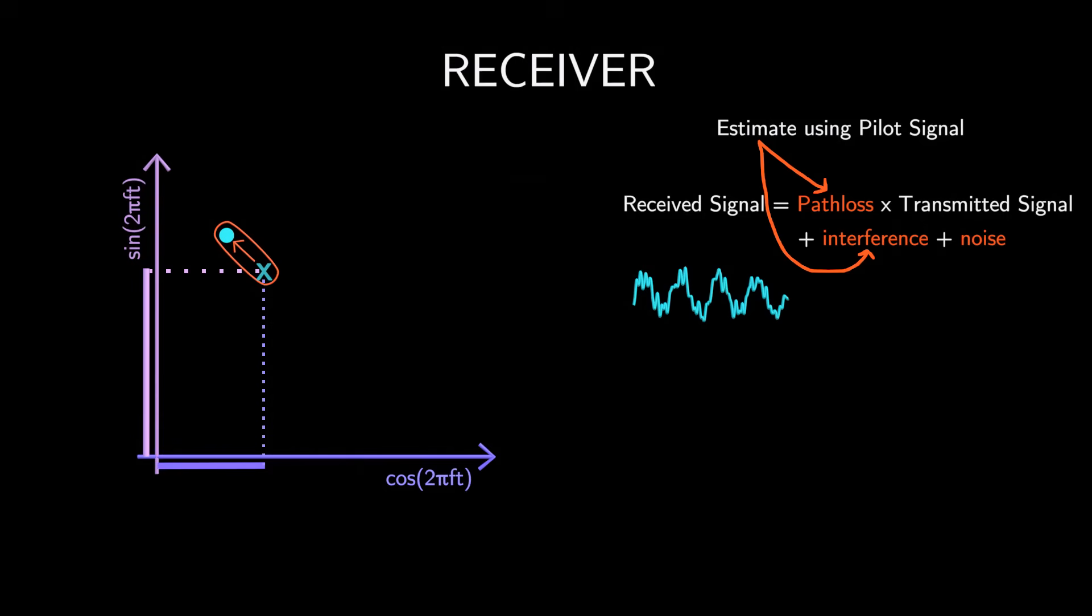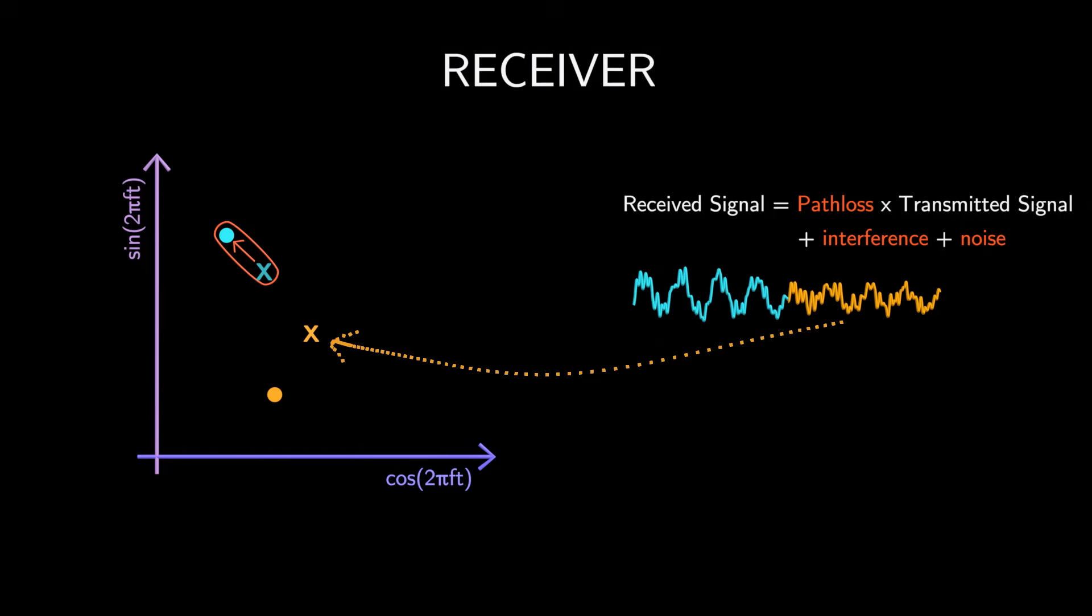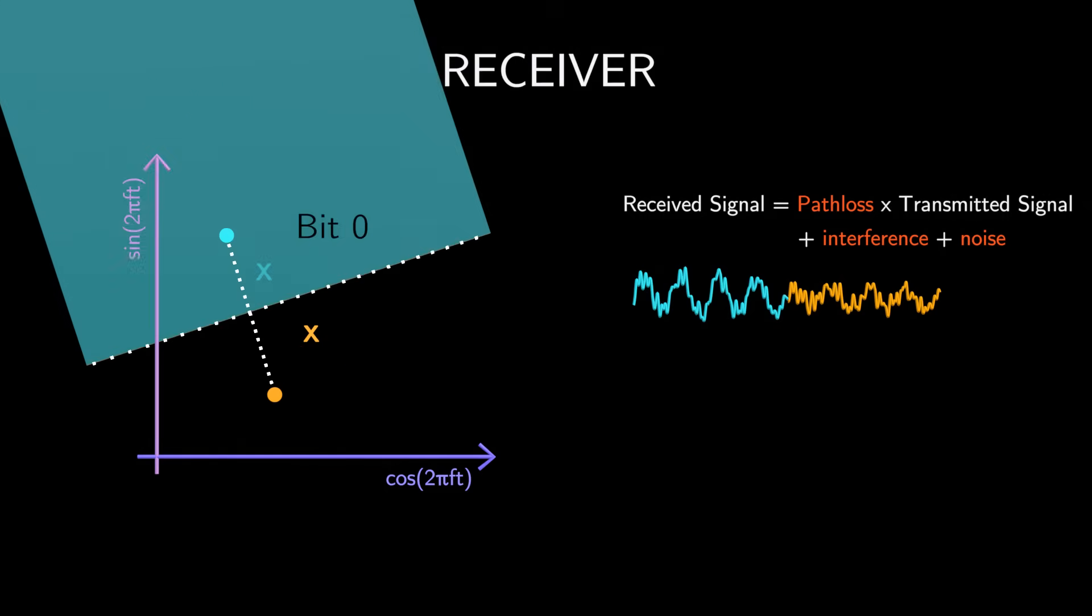Remember that our transmitter has sent bit 1 signal right after the bit 0 signal. So the receiver receives the distorted version of the transmitted signal and would map that also to a constellation point, which is, of course, deviated from the transmitted constellation point. To distinguish between bit 0 and bit 1, the receiver divides the entire constellation area into two regions, one for bit 0 and another for bit 1.